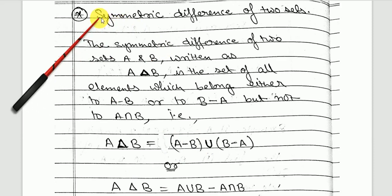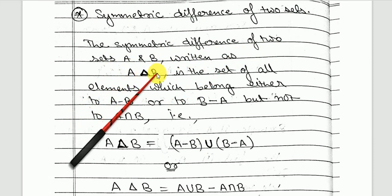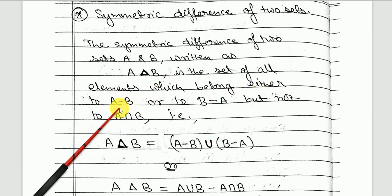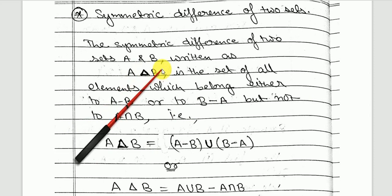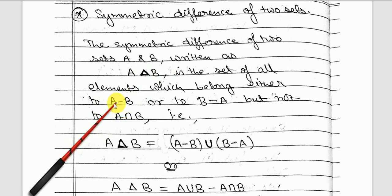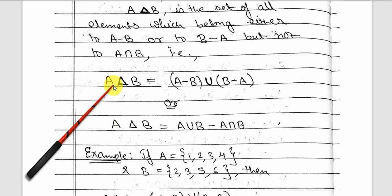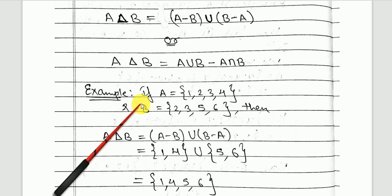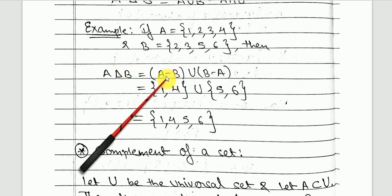Next is the symmetric difference of two sets. The symmetric difference of two sets A and B, written as A △ B, is the set of all elements which belong to either A minus B or B minus A, but not in A intersection B. Mathematically, A △ B = (A minus B) union (B minus A), which is also equal to (A union B) minus (A intersection B).